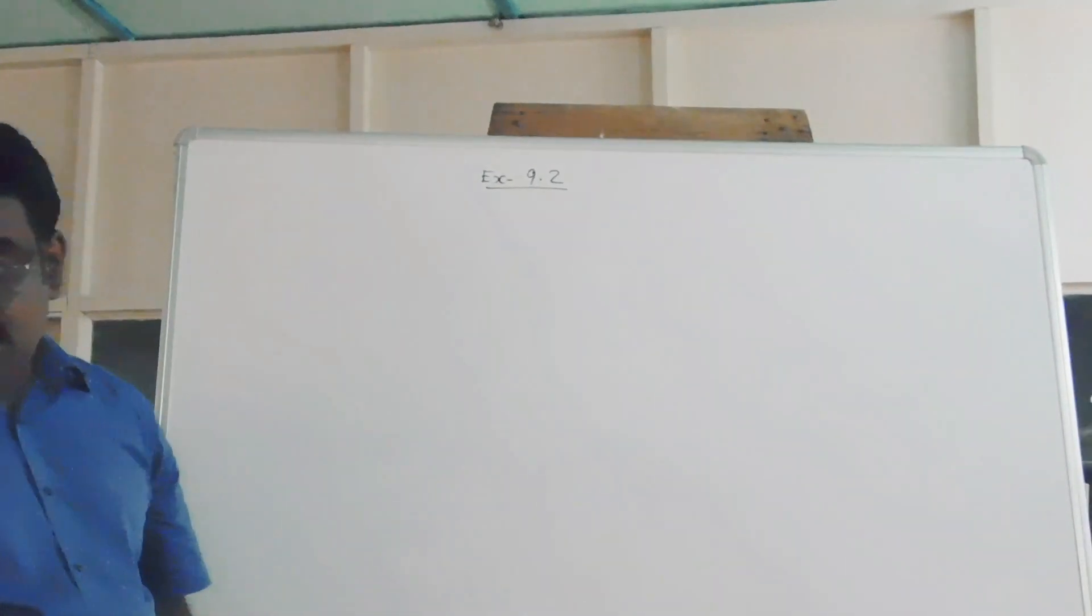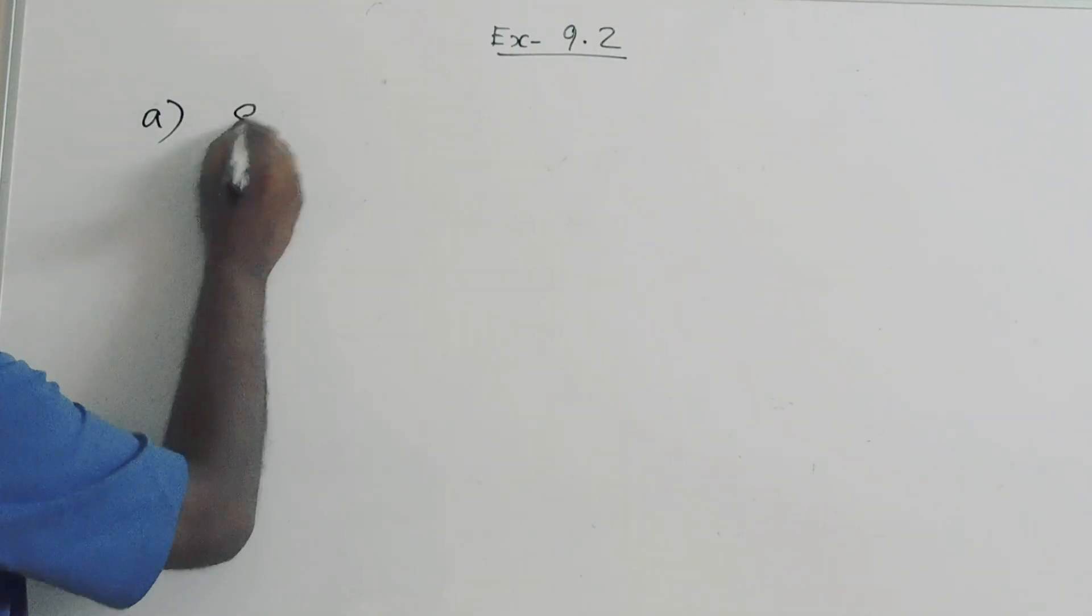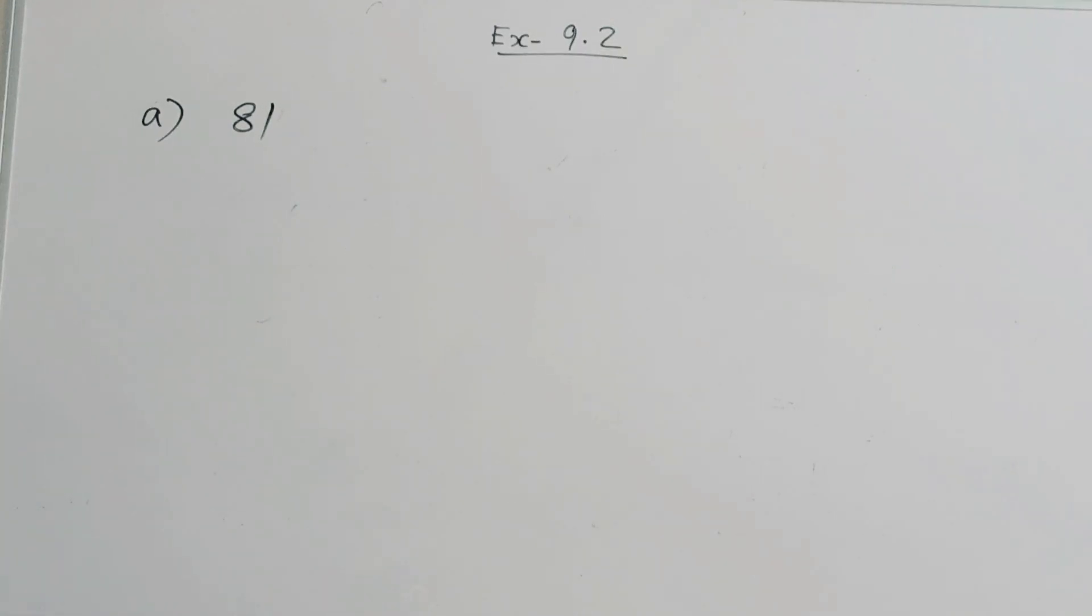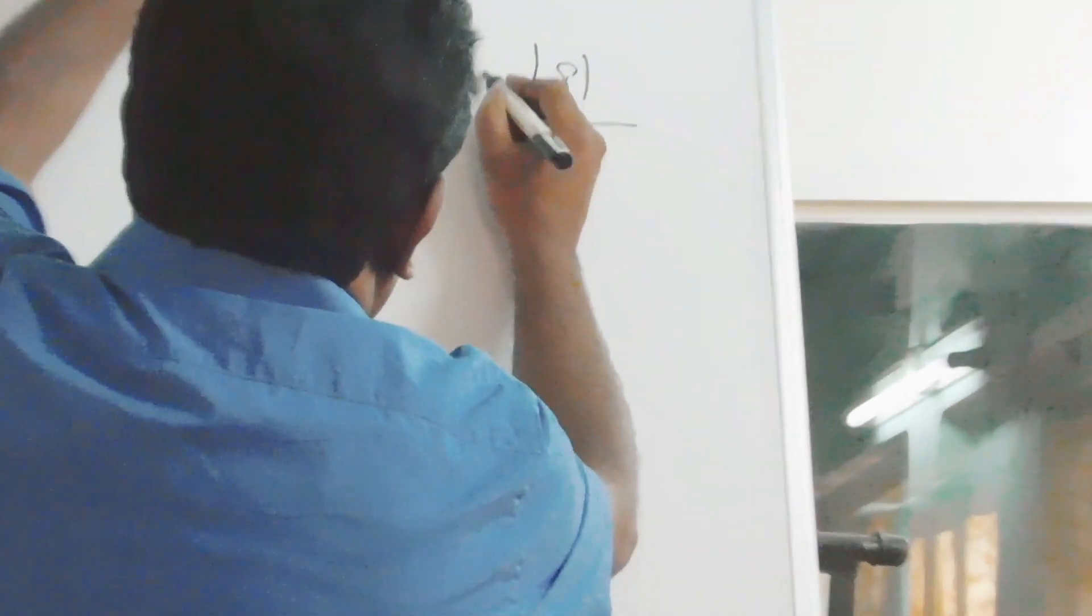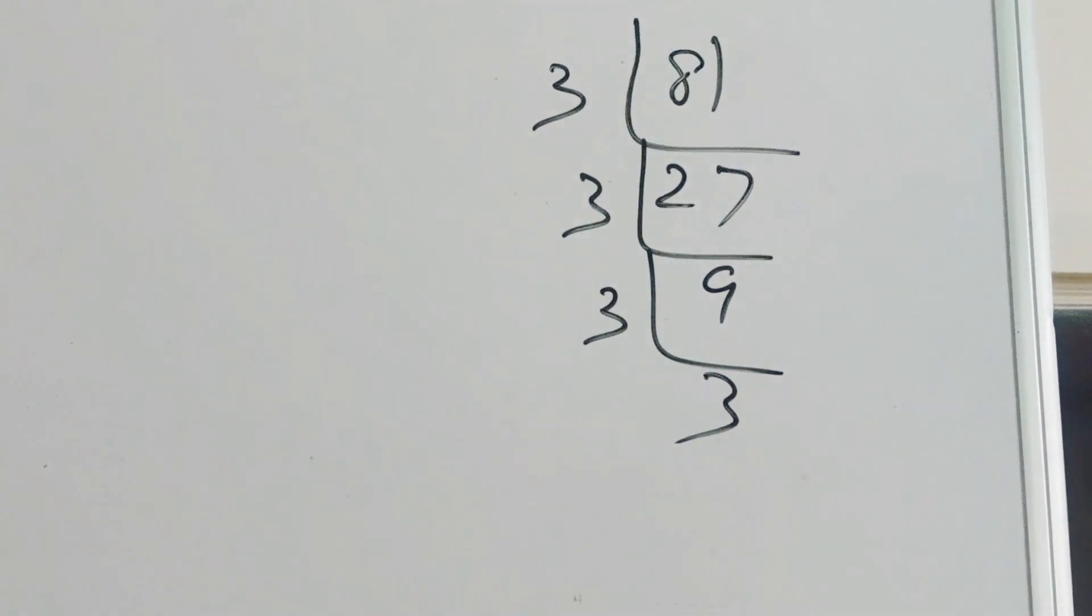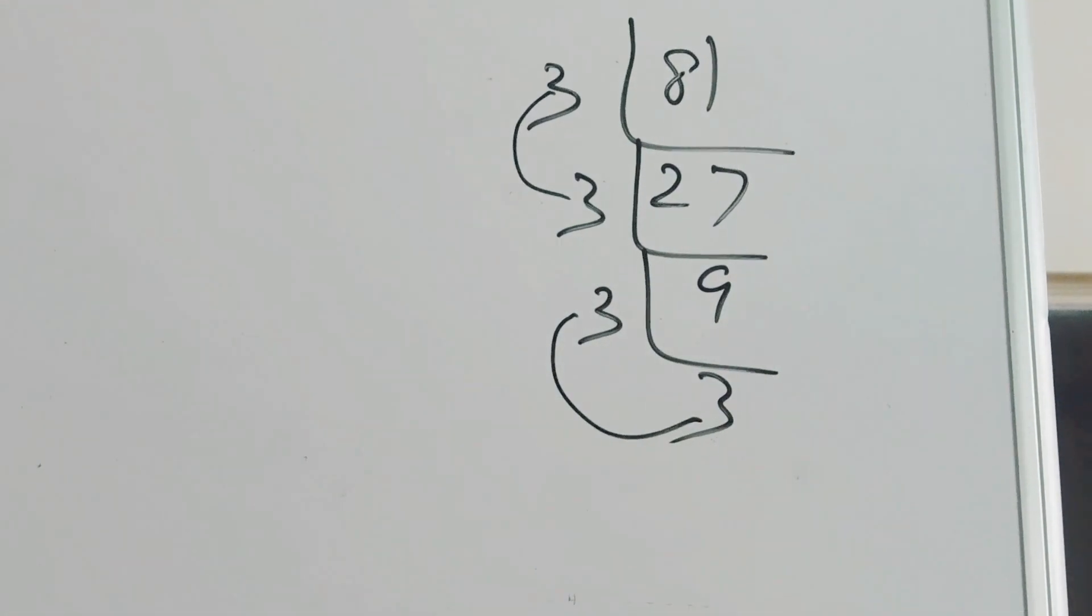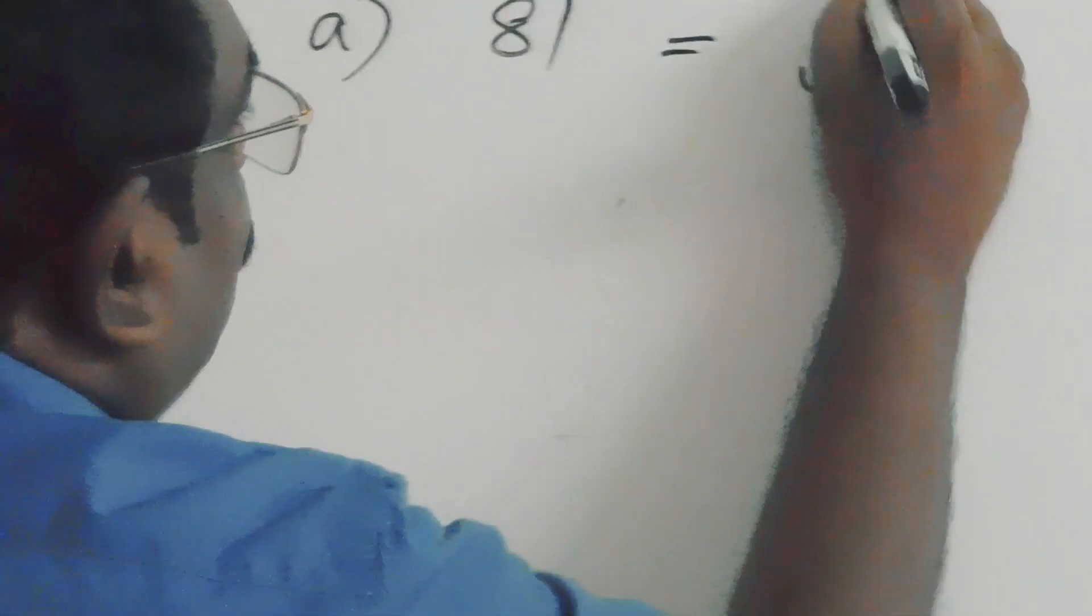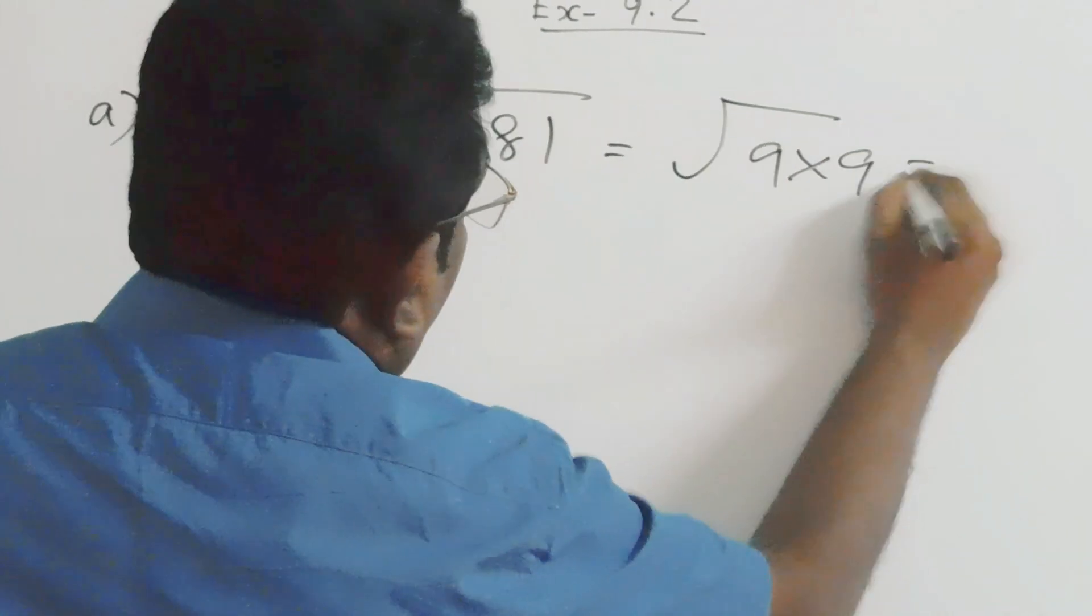Now, we have to find out the square root of 81. For that, we have to factorize this number. Here question number one, we have to find out the square root of 81. The square root of 81 equals 9 into 9. Therefore, the square root of 81 equals 9.